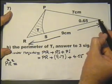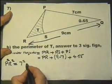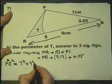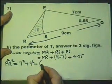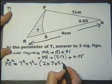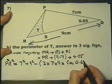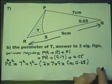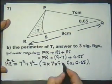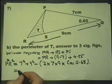...the two sides with the included angle squared, minus 2 times those two sides times the cosine of the angle that is included between those two sides. PR² = 7² + 9² - 2(7)(9)cos(0.65). I'll type it all into the calculator.